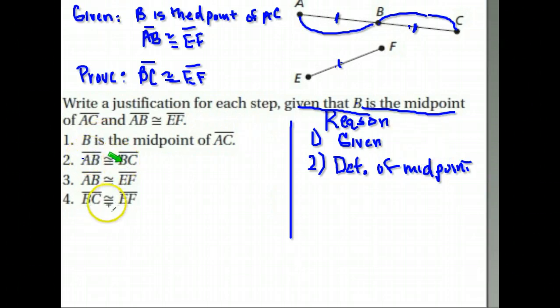Step three: they said AB and EF are the same size. How did we know that? What's our justification? They told us that was given to us. So again, we have something from our given.